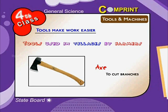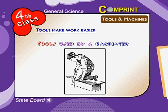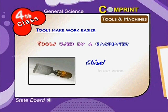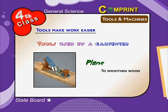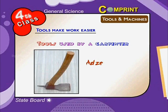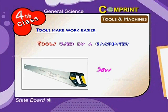Tools used by a carpenter: a chisel to cut wood, a plane to smoothen wood, and a saw to cut logs and saw wood.